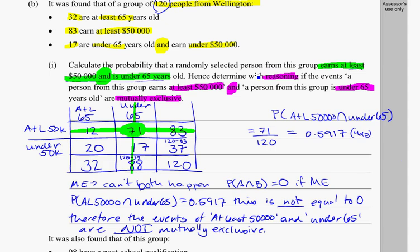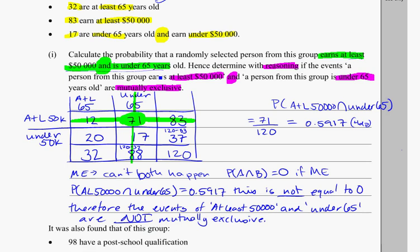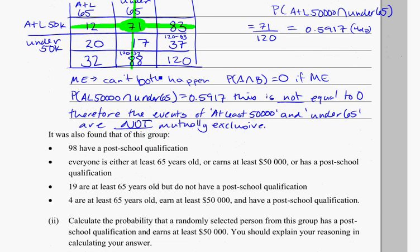Alright, so we're going to carry on with question B. Since it's all under the category of question B, part 1 and then part 2, I'm going to assume that this information about there being 120 people from Wellington, 32, 83, 17, all that's still going to be the same. That's still going to happen for us, so we need to carry that information with us. Let's see what they've added to it to make it worse.